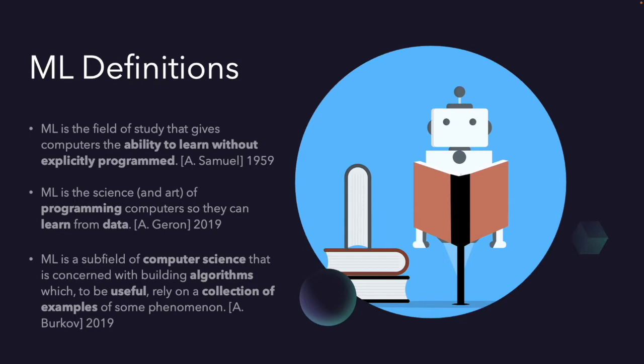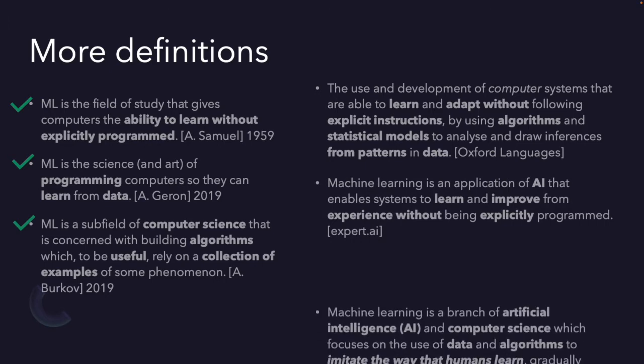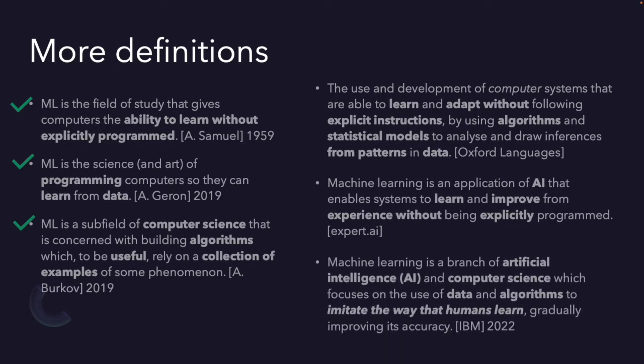Now, I want to show three more definitions from Oxford Dictionary, expert.ai, and IBM. And as you see, there are some same and similar words, also some different words in each definition. For example, expert.ai and IBM use artificial intelligence in their definitions.